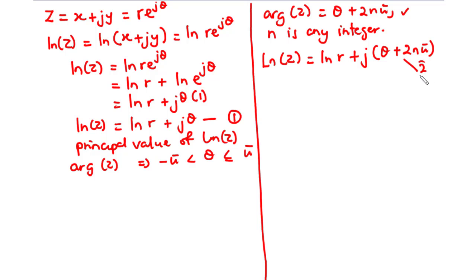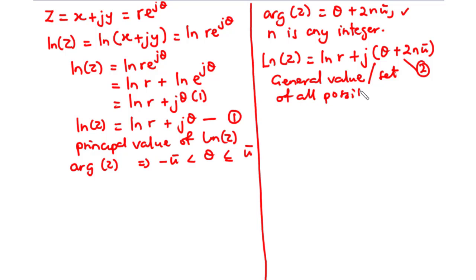Let's call this Equation 2. This is the equation to find the general value, or the set of all possible values, of ln z. Notice that in Equation 2, L is uppercase. When L is uppercase, we want to find the general value of ln z. However, if L is lowercase, as in Equation 1, we want to find the principal value of ln z.